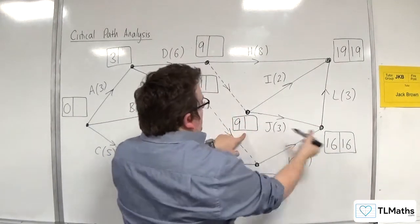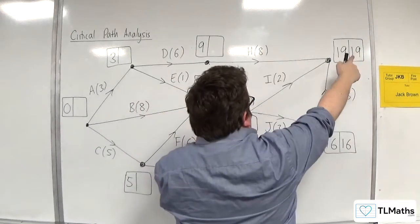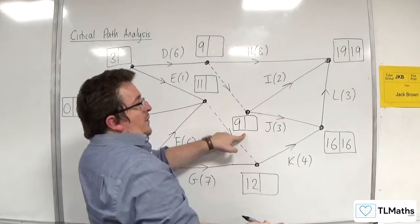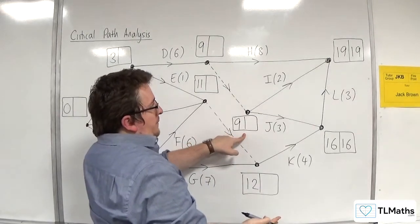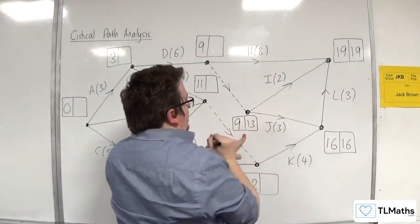So we've got, for this one, 16 take away 3, so 13, or 19 take away 2, which is 17. So you're always going to take the smaller of these ones. So 17 or 13, so 13 wins it.